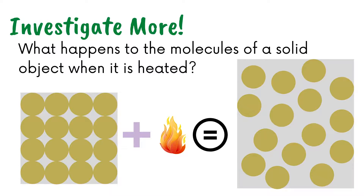What happens to the molecules of a solid object when it is heated? The molecules of solid objects are compact. However, when a solid object is heated, the compressed molecules will expand. The molecules move and collide.